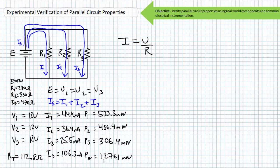Make sure the components you intend to use can handle the expected power dissipation. We're already second-guessing the choice of a half-watt rated R1 to handle 533 milliwatts. R2 is dissipating 436.4 milliwatts, so a half-watt rated resistor would do the trick, although a one-watt might be a better choice. R3 is dissipating the smallest amount of power at 306.4 milliwatts, so again a half-watt resistor might do the trick. A quarter-watt resistor might work briefly but would be the component that fails first. In this case, we're not keeping the circuit built for any length of time, so we'll just use what we grabbed from supply.